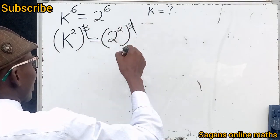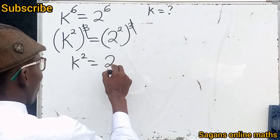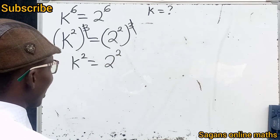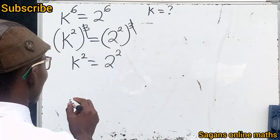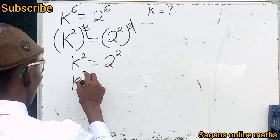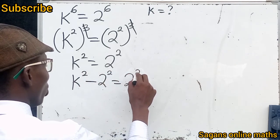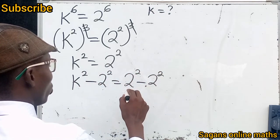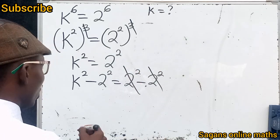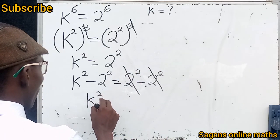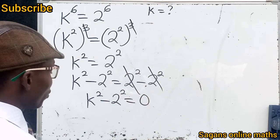Since the powers are the same, we can cancel them, leaving k squared equals 2 squared. Now I'm going to subtract 2 squared from both sides: k squared minus 2 squared equals 2 squared minus 2 squared. So we get k squared minus 2 squared equals zero.